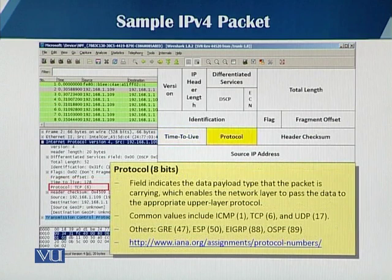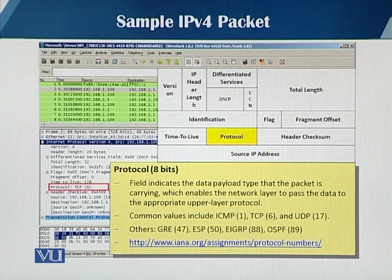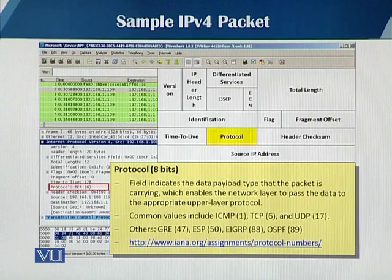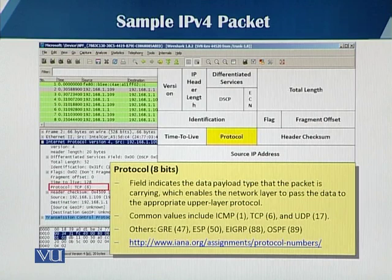The next field is the protocol field. It's an 8-bit field that tells you the type of data the packet is carrying. Every upper-layer protocol has its own value assigned by IANA. For example, if the packet carries ICMP data, the value is 1. For TCP, it's 6. For UDP, it's 17.